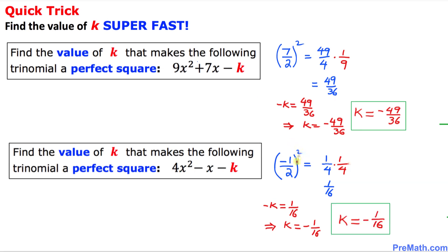Thus our k value turns out to be negative 1 over 16, and that is our final answer. Thanks for watching, and please don't forget to subscribe to my channel for more exciting videos. Bye.